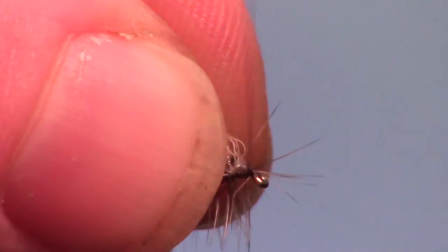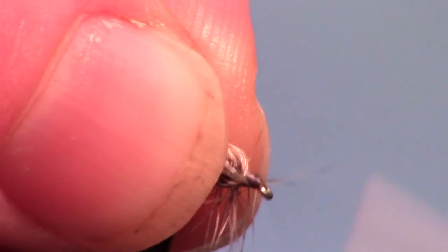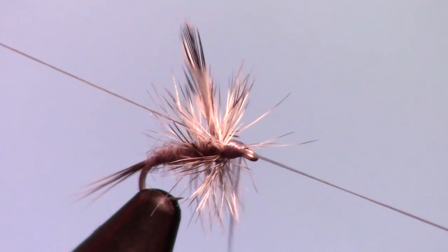You will probably have some fibers trapped, so pull back as many as you can while you build a small head on your fly. Whip finish your fly carefully with only a few wraps.